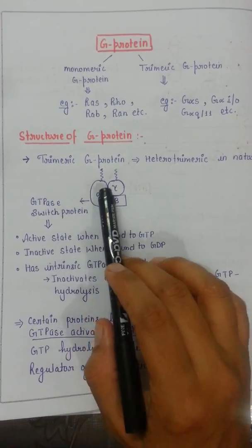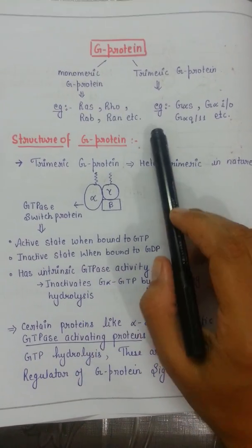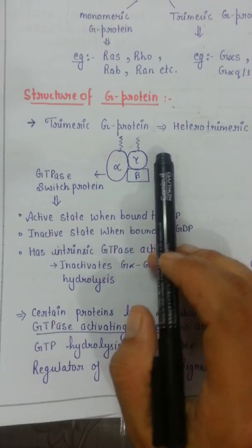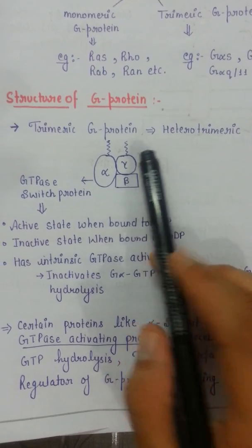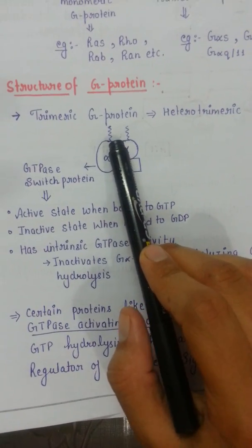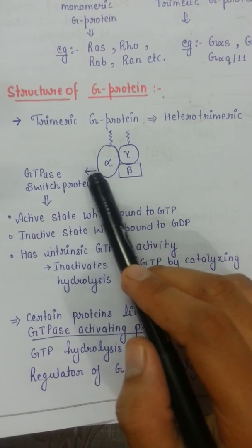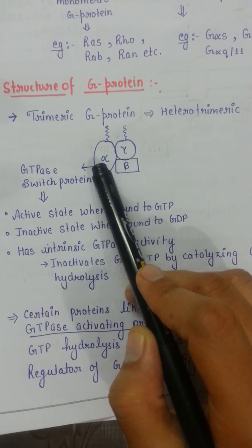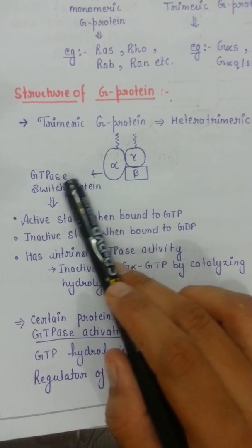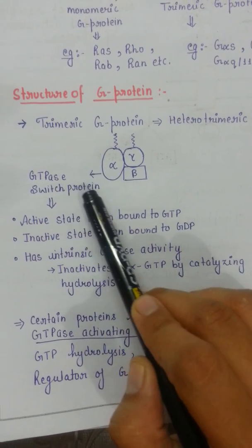We call it a G-protein because its alpha subunit interacts with or binds GTP or GDP — your guanine nucleotides. It is generally called the GTPase switch protein because it switches between GTP and GDP. When in its inactive form — when no signal is present and the ligand is not bound to the receptor — the G-protein is bound to GDP. As soon as the ligand attaches to the receptor, GDP is replaced by GTP.